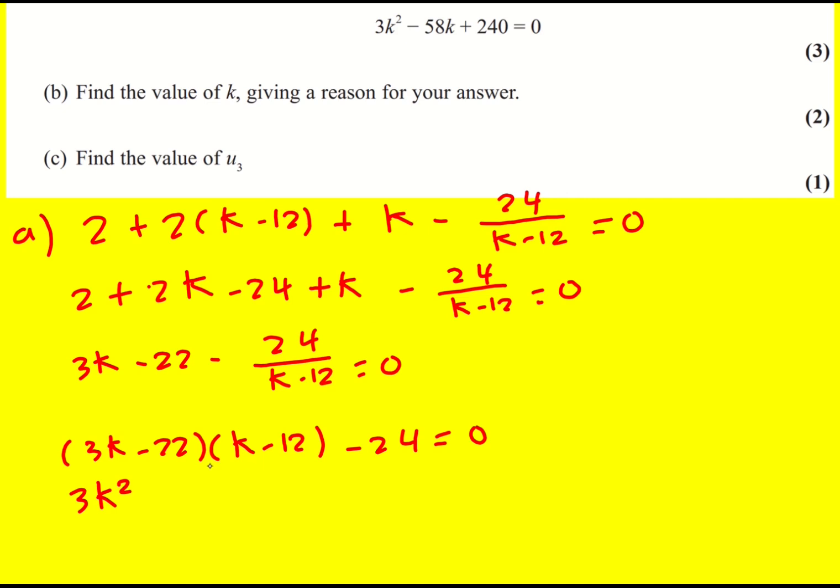Then 3k squared minus 36k minus 22k plus 22 times 12. Well, 11 times 12 is 132, so just double it. It's going to be 264. Therefore, 3k squared minus 58k plus 240 is equal to 0.